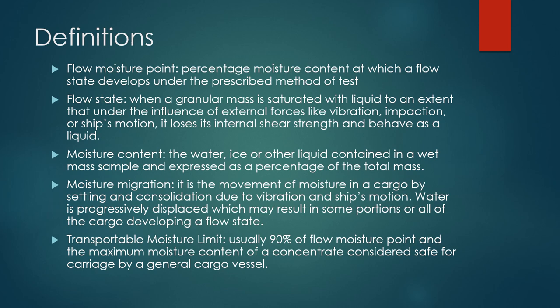Moisture content is expressed as a percentage of the total mass. Then we have moisture migration, which is the movement of moisture in a cargo by settling and consolidation due to vibration and ship's motion. Water is progressively displaced, which may result in some portions or all of the cargo developing a flow state. Finally, the Transportable Moisture Limit is about 90% of the Flow Moisture Point, and is the maximum moisture content of a concentrate considered safe for carriage by a general cargo vessel.